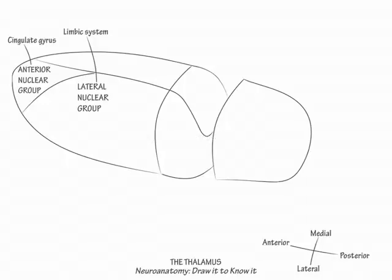Then label the ventral nuclear group and the ventral lateral thalamus. It is a widely important relay group. Label the constituents of this group from anterior to posterior.